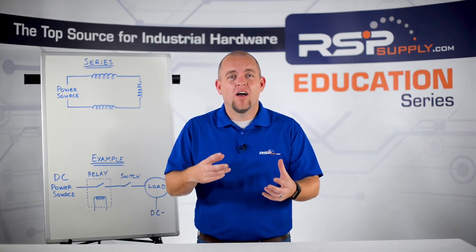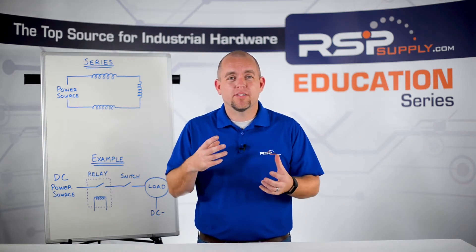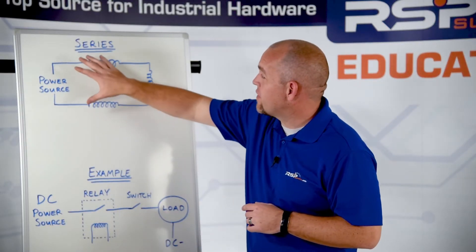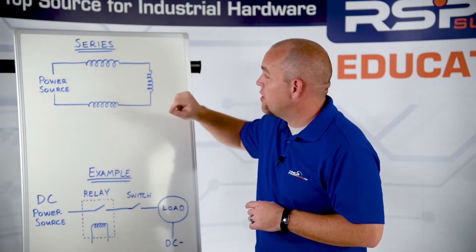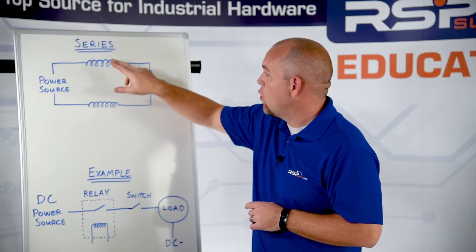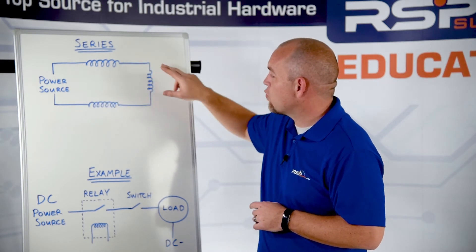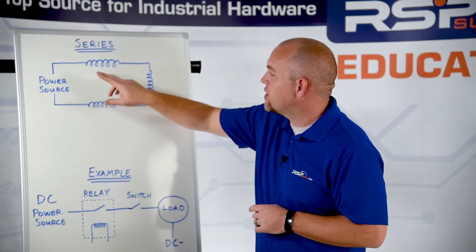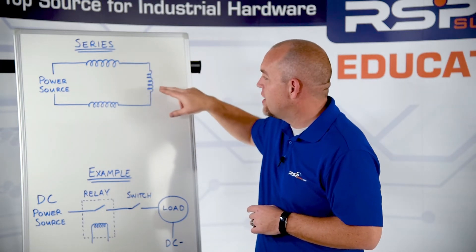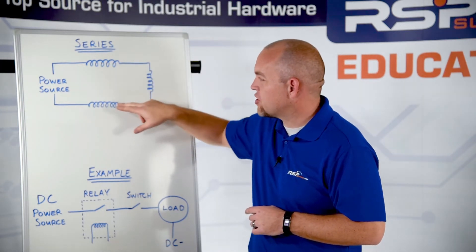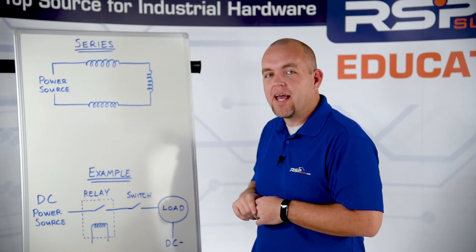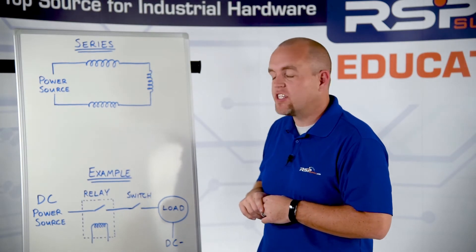Let me show you an example of a few different types of series circuits. As you can see here, we have a very simple example of a series circuit. We have our power source with multiple resistors on this circuit. You can see that the current will have to pass through each resistor on this circuit.